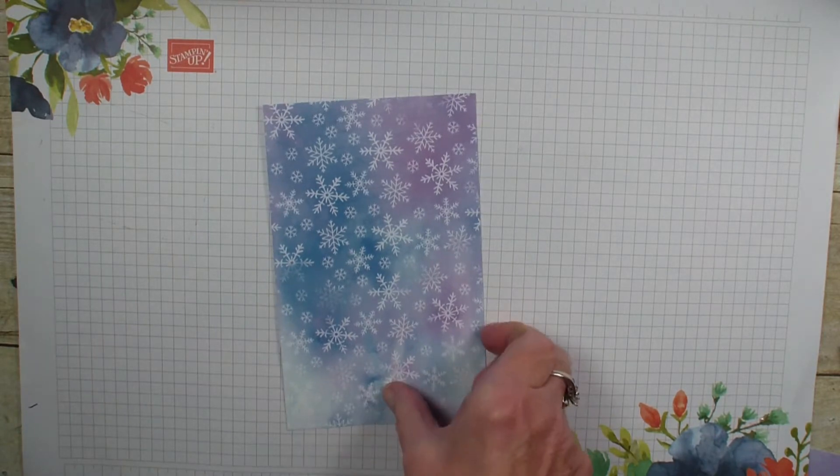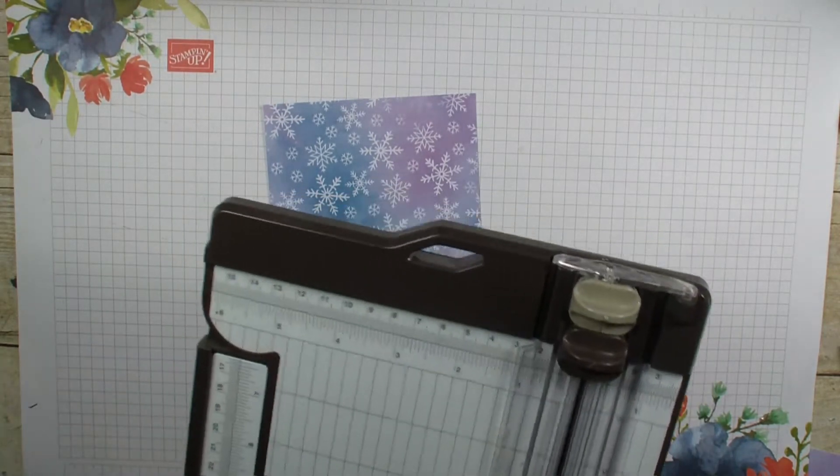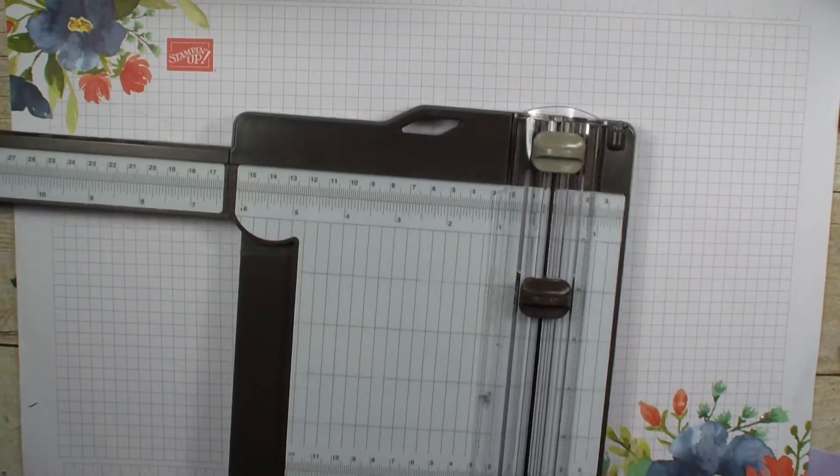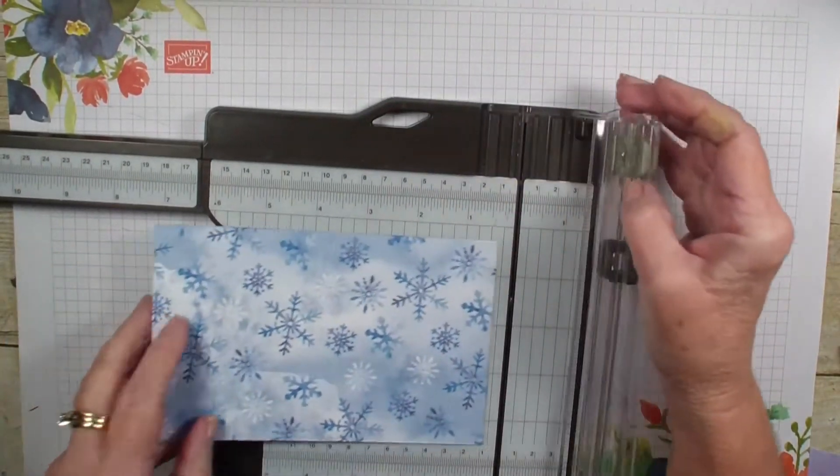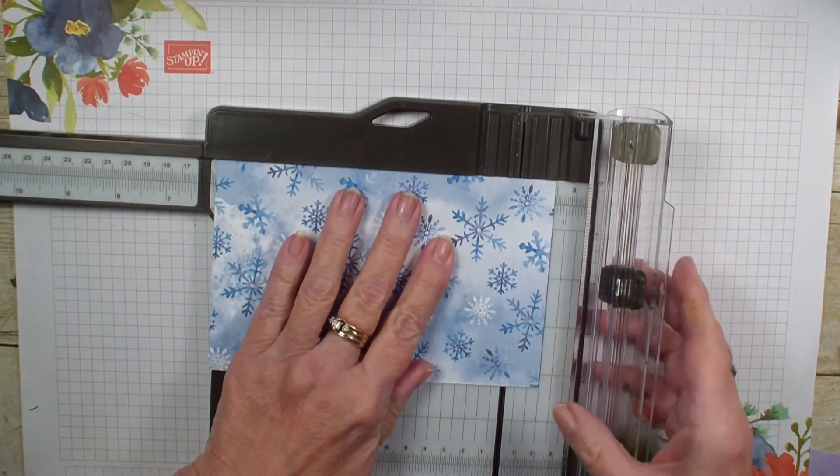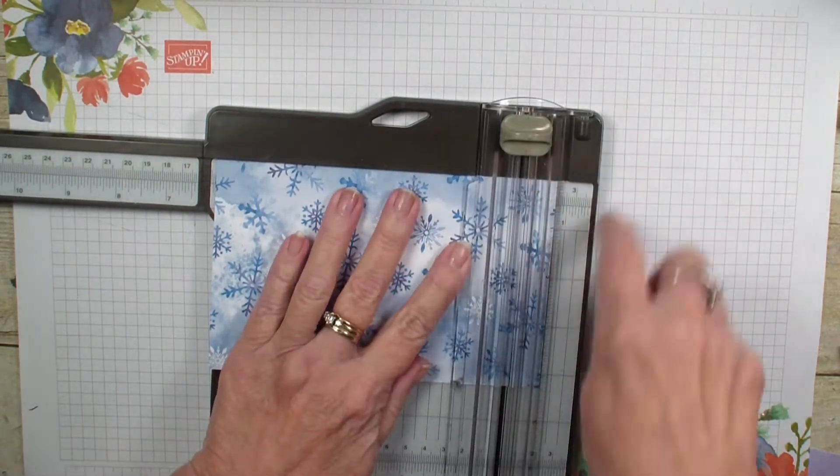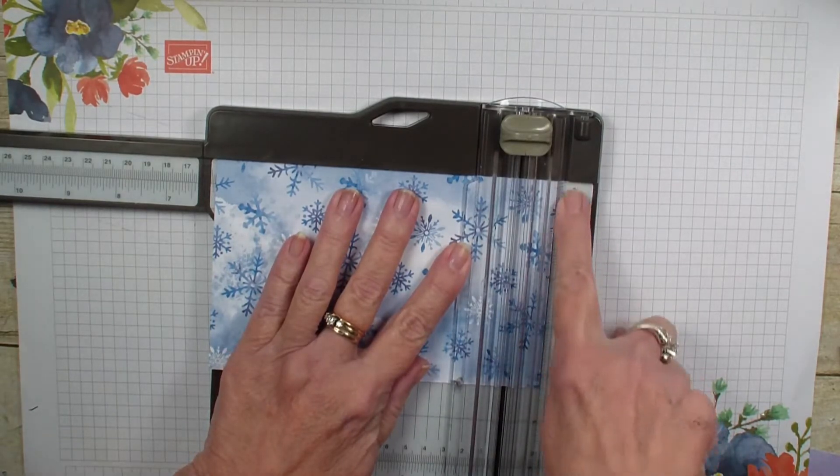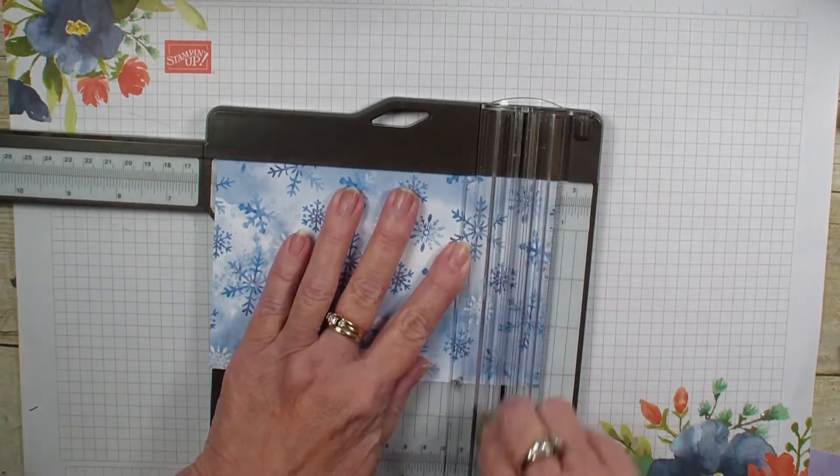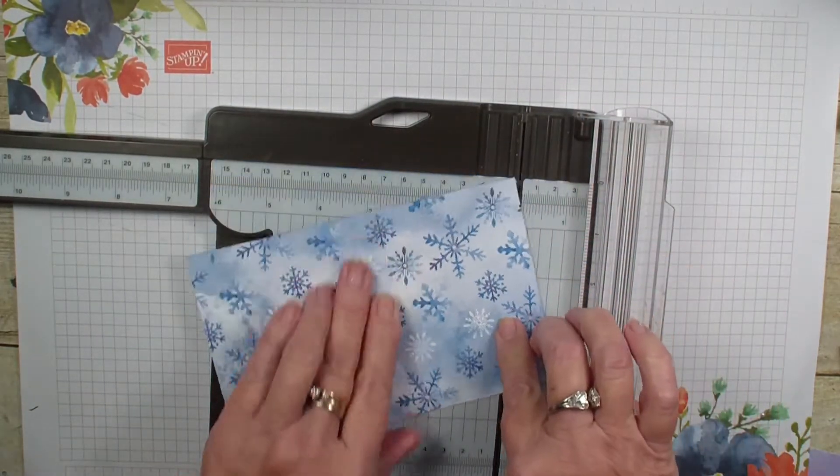What we're going to do is bring in my trimmer and along that 6 and 3/4 inch side, we're going to do some scoring. First, we are going to score at 3/4 of an inch. I always like to use this side when I have a small measurement under an inch and a quarter.